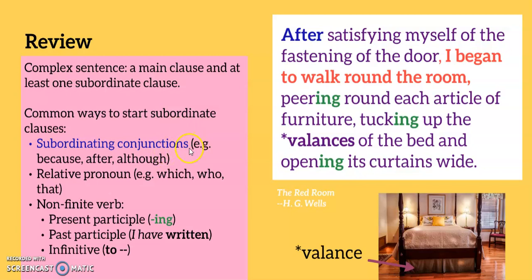Here's a summary of common ways to start subordinate clauses: with a subordinating conjunction, for example because, after, although; with a relative pronoun like which, who or that; or with a non-finite verb that stays the same no matter what the words are around it — for example, the present participle (the -ing form of a verb), which we have here; the past participle, as in 'I have [done]'; or the infinitive: to walk, to sit, to stand.